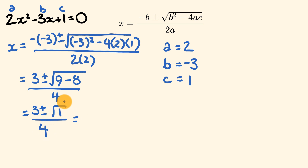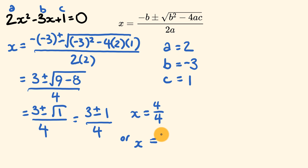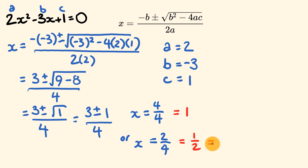The square root of 1 is equal to 1, so we have 3 plus or minus 1 over 4. Now we can solve this easily. x could equal 3 plus 1 over 4, so 3 plus 1 is 4 over 4. Or x could be equal to 3 minus 1: 3 minus 1 is 2, also over 4. So x equals 1 or x equals 1 half, which is 0.5. And that's how you use the quadratic formula.